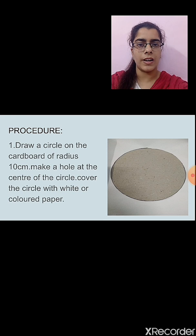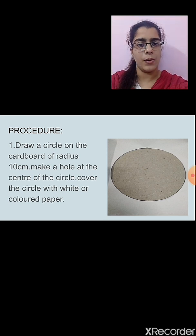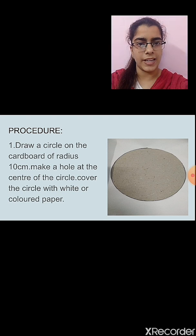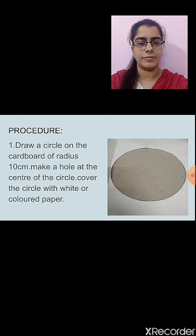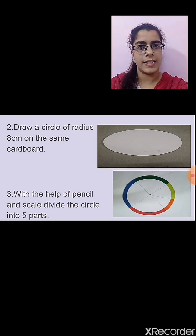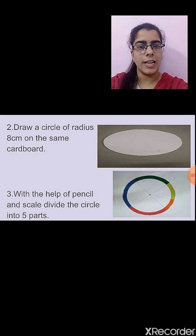For making the wheel, take a cardboard that is available to you. On the cardboard, make a circle of 10 cm and make a hole at the center of the circle. Then take white paper or any other colored paper and make a circle of 10 cm on it, and stick this paper on the cardboard. After that, draw a circle of radius 8 cm on the same cardboard. With the help of a pencil and scale, divide the circle into 5 sections. See how it is drawn in the image.